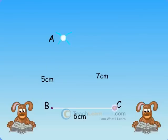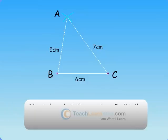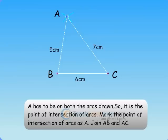A has to be on both the arcs drawn. So, it is the point of intersection of arcs. Mark the point of intersection of arcs as A. Join AB and AC.